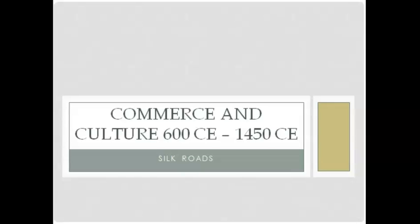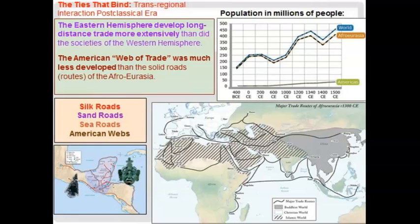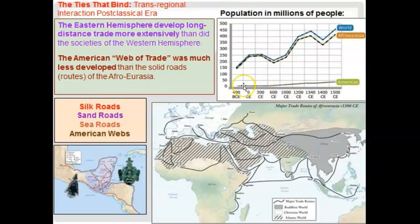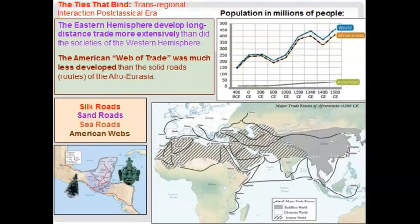We start with the most famous of the roads — the Silk Roads. Looking at the population chart in the top right corner, it starts in 400 BCE and takes us all the way up to 1500 CE. The first fascinating thing is the difference between the Americas and Afro-Eurasia. Most of the world's population — substantially more — was in Afro-Eurasia as opposed to the Americas, and that's going to stay the same all the way until modern times.